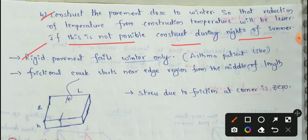Rigid pavement fails in winter only. This rigid pavement's critical condition is only in winter — just like an asthma patient who struggles in winter. That is why rigid pavements are also in a long struggle phase in winter and may directly fail.